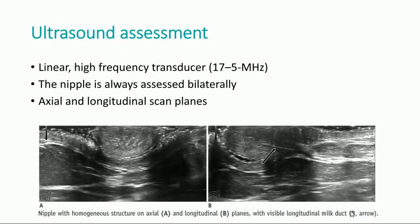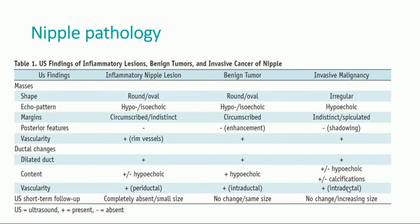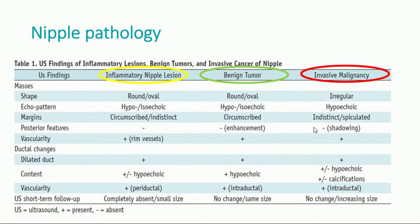The ultrasound assessment implies a linear high frequency transducer. The nipple is always assessed bilaterally on axial and longitudinal scan planes. Inflammatory and benign tumors commonly present as round or oval masses, isoechoic with circumscribed margins. Inflammatory lesions have a periductal vascularity or rim vessels, and benign tumors show internal vascularity. Malignant tumors are usually irregular hypoechoic masses with indistinct or spiculated margins and sometimes shadowing might be present.